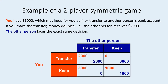We want to model this setting using the framework of game theory. We have to identify the players — in this case the other person and you. We also have to identify the actions each player may take: you can either transfer the money or keep it. Lastly, we have to determine a preference order over outcomes. For simplicity, let's assume players only care about money, and use dollars as utility or fitness.